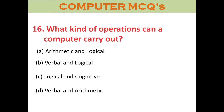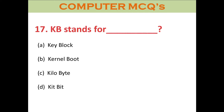Question sixteen: What kind of operations can a computer carry out? A. Arithmetic and Logic. B. Verbal and Logical. C. Logical and Cognitive. D. Verbal and Arithmetic. The right answer is A: Arithmetic and Logical.